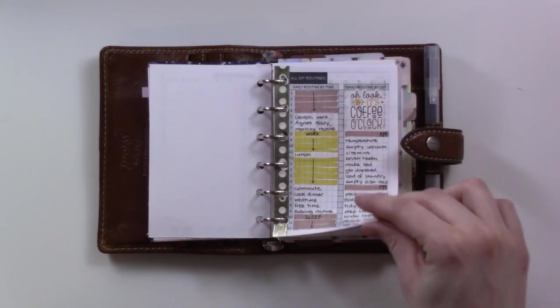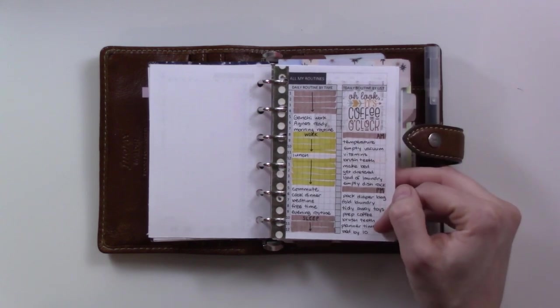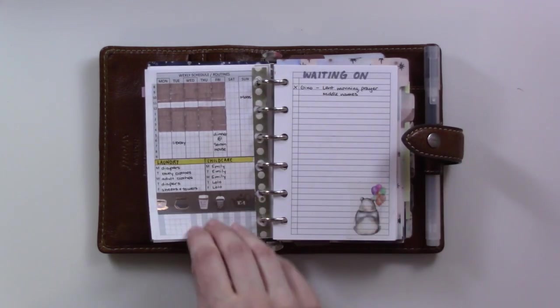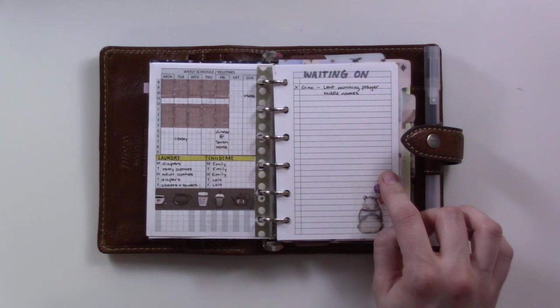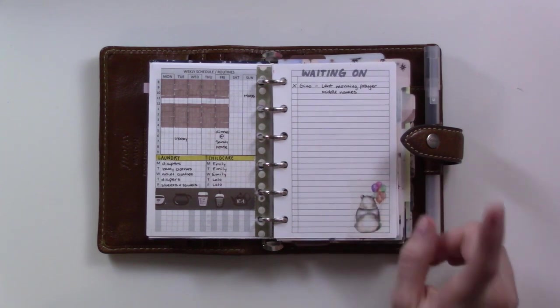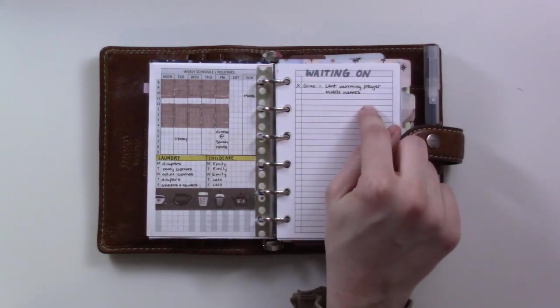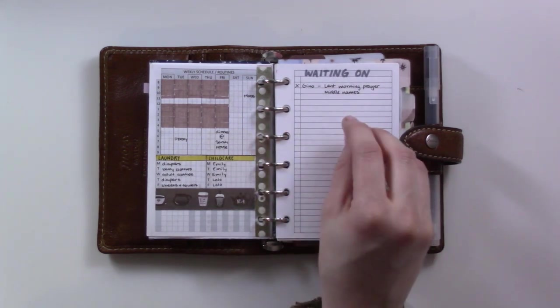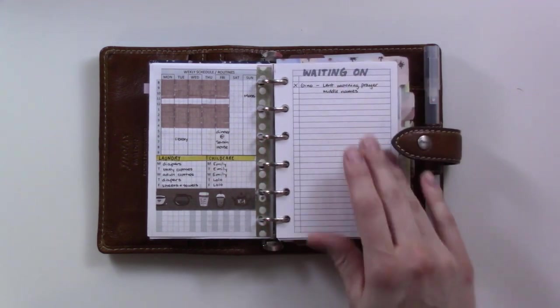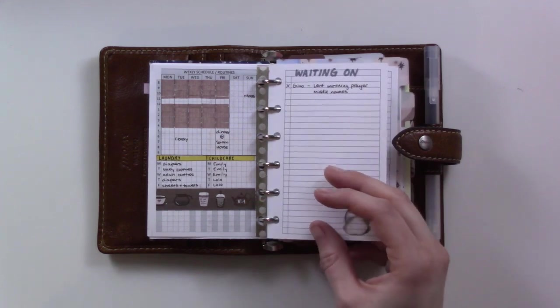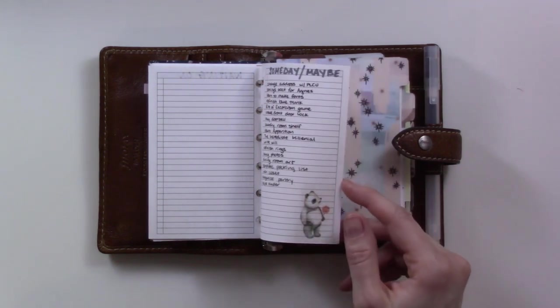This is all my routines insert, also from My Summer Touch. It's just sort of a place if I need to look at what my AM or PM routines look like. This is my waiting on list. I got an idea from somebody in the comments to put things that you need to talk about with your spouse on your waiting on list. Someday maybe list is fuller than it should be but whatever I guess that's what it's for.